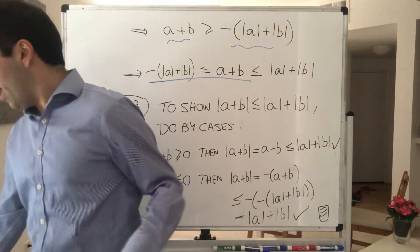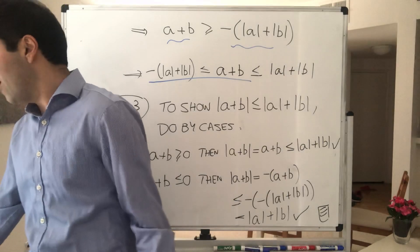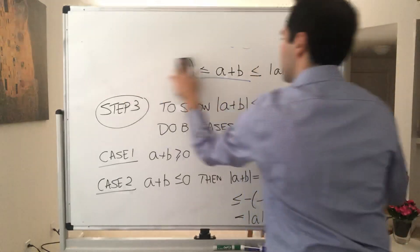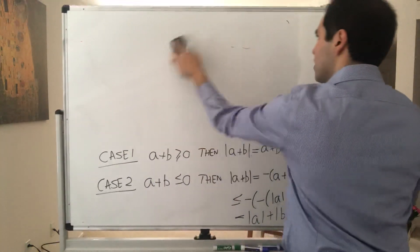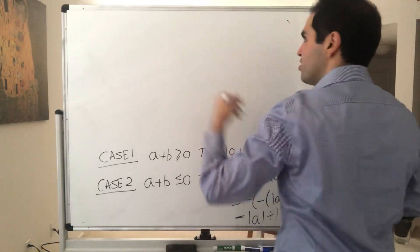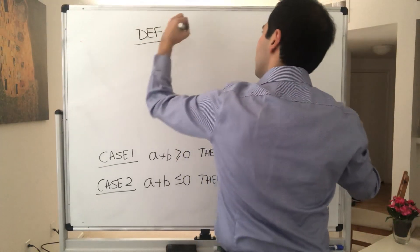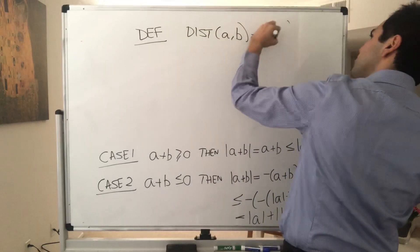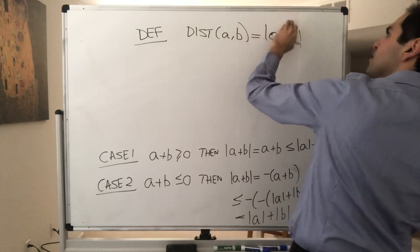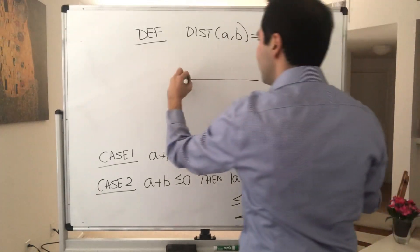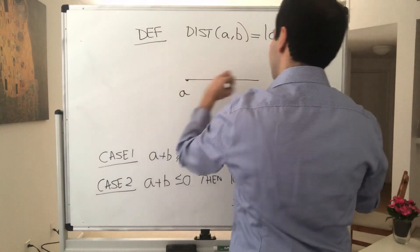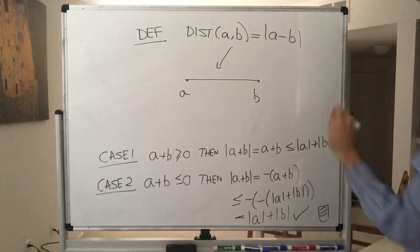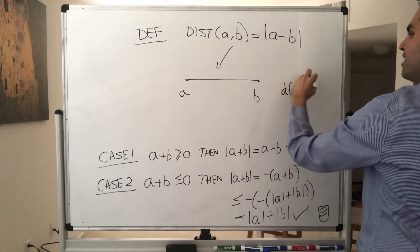Last but not least, why is it called the triangle inequality? It will be clear after the following result. First, just a little definition: the distance between a and b is the absolute value of a minus b, which is the same as the absolute value of b minus a — it's literally the distance between two points. Some people call it d(a, b).